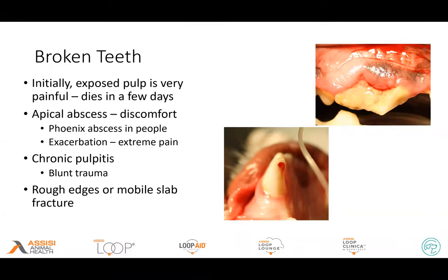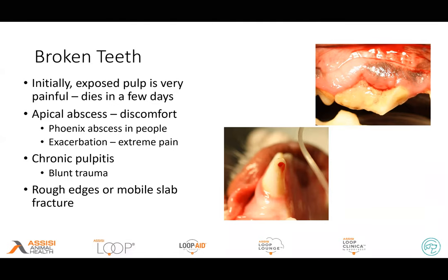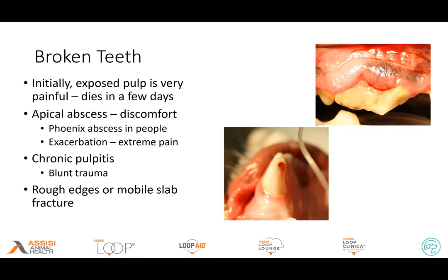Sometimes an animal will chew more on one side than the other if there is discomfort. Phoenix abscesses have been described in people where an exacerbation of acute flare-up can cause extreme pain, especially if it can't drain, as in a closed abscess. We'll also see teeth that might have pulpitis due to blunt trauma but not have an open canal — but if that ends up cutting off the blood supply to the pulp and we get a non-vital pulp, we can still get that infection and abscess. If we have a mobile slab fracture or a really rough edge rubbing against the cheek, we need to deal with that, and certainly get rid of anything causing chronic inflammation or infection.